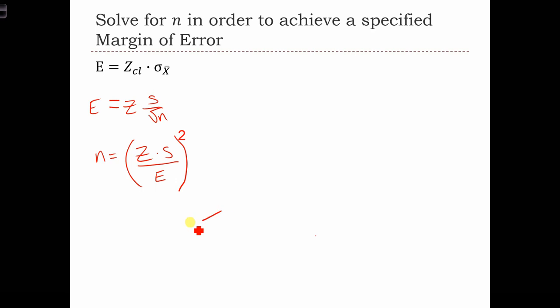So, for a given margin of error and a given level of confidence, which controls the size of z, and for a known level of standard deviation in our sample, we can decide exactly how big n has to be in order to achieve our desired margin of error.